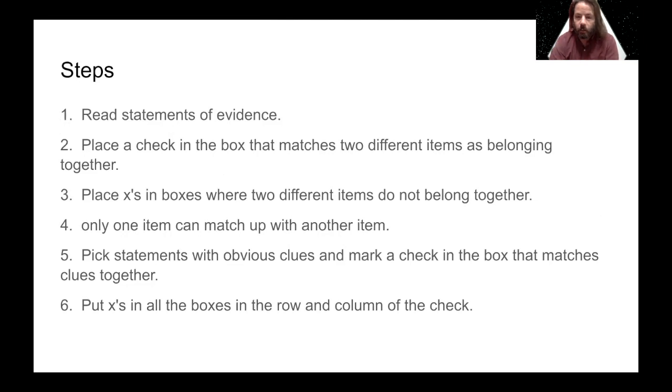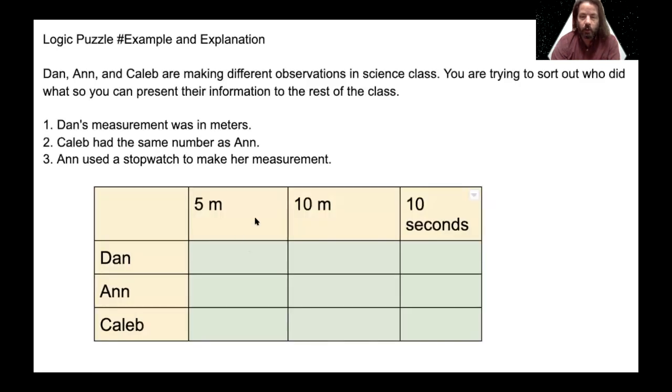Only one item can match up with another item. Pick statements with obvious clues and mark a check in the box that matches clues together. You're going to put X's in all the boxes in the row and column of the check. So what do I mean by that?